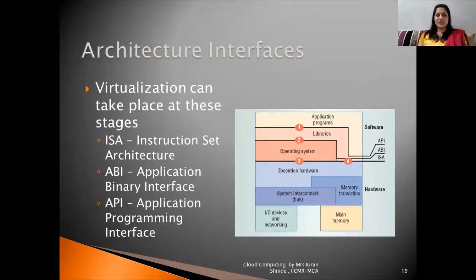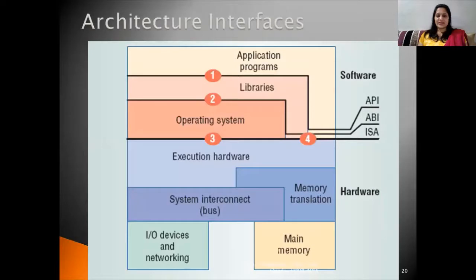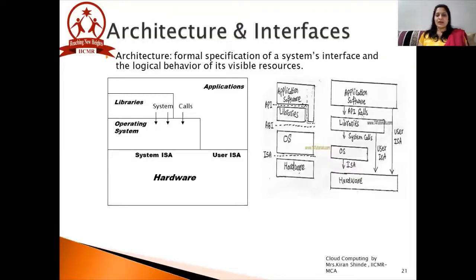Now let's try to understand these three interfaces with this particular diagram in a more clear way. You can see there are numbers associated with every interface. At numbers three and four, the instruction set architecture interface is mentioned along with the operating system. On top of it, serial number two signifies system libraries, and at number one, you can see application programs with the application programming interface. ISA, that is instruction set architecture, situates between the operating system and the hardware, and is useful for establishing the interaction between your operating system and the actual hardware.